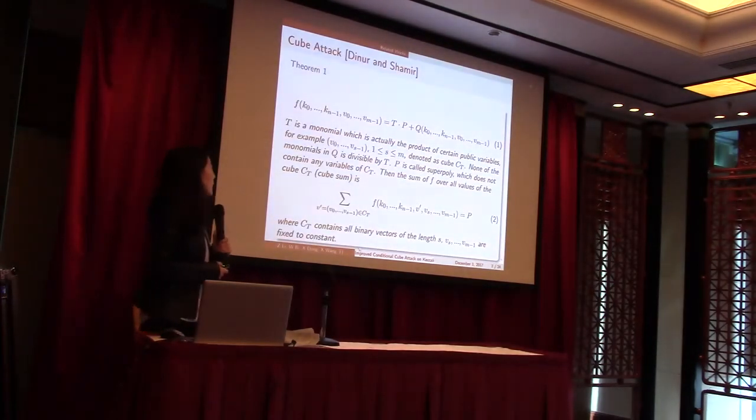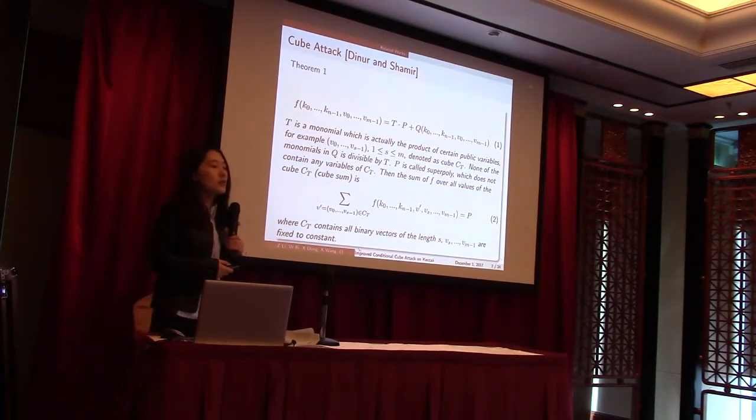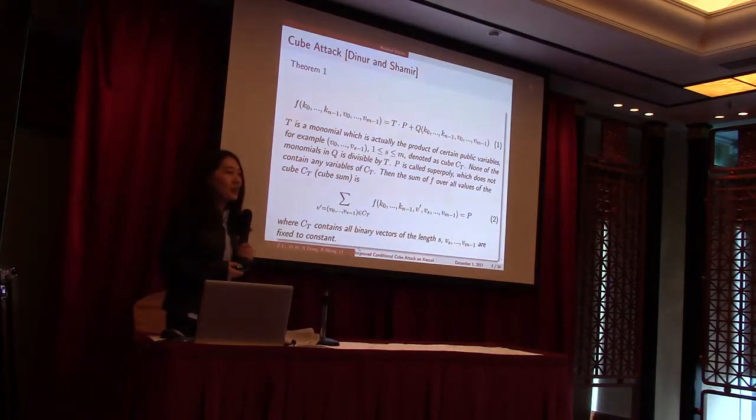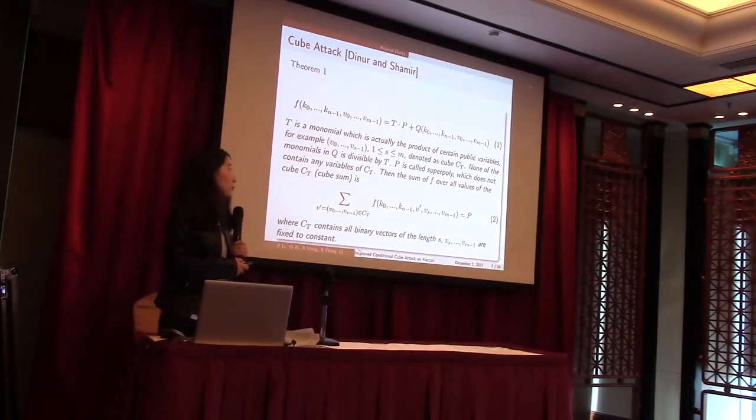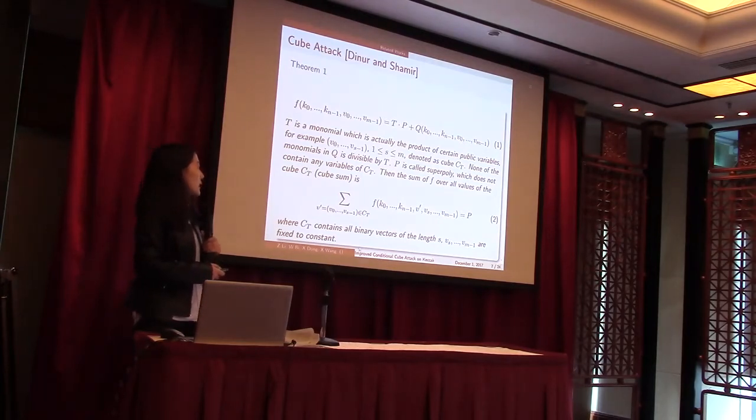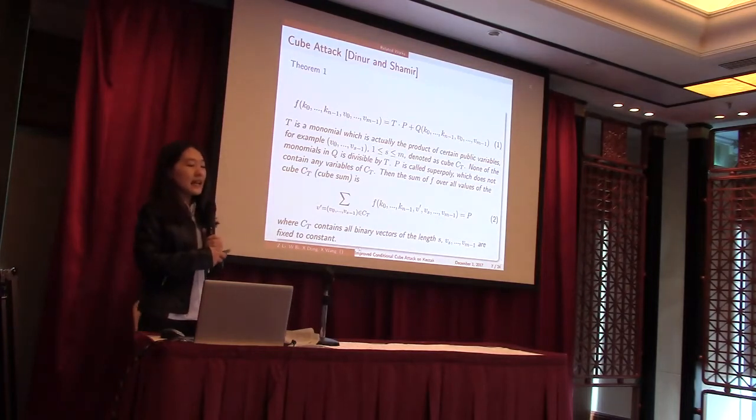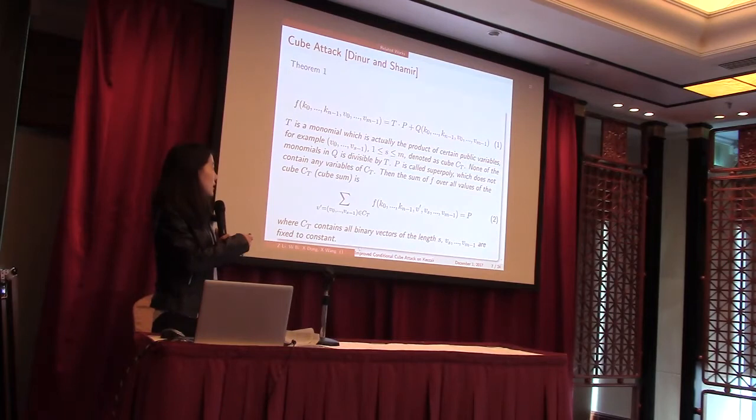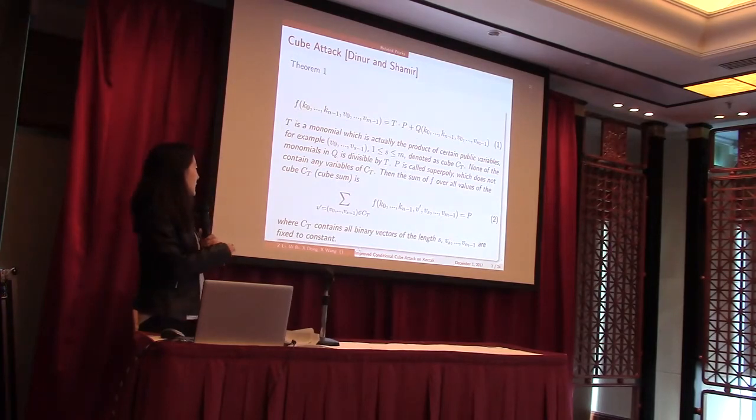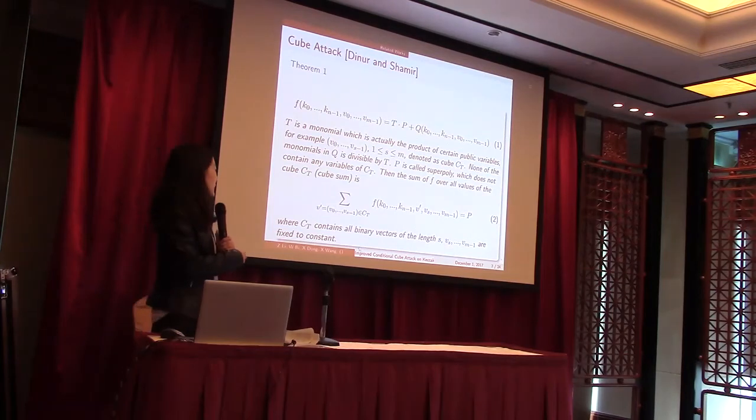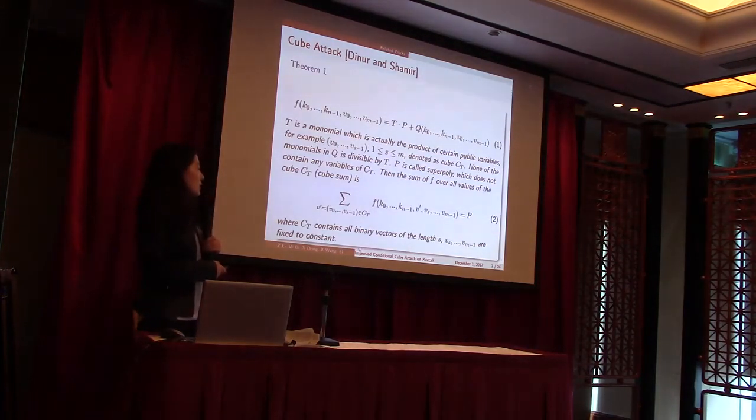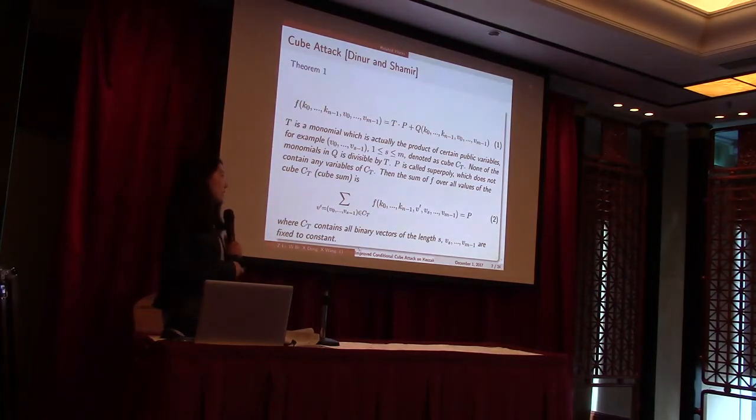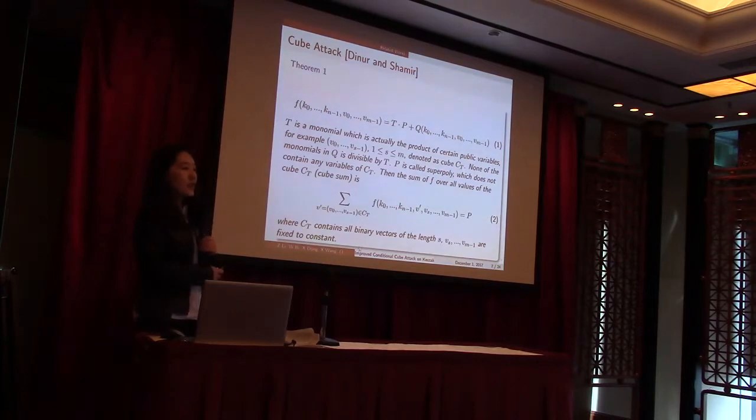In cube attack, a cipher algorithm is represented as a polynomial F and T is a product of public variables. The monomials in F which is divided exactly by T is put in T times P, and the others are put in Q. When they sum up F over all the values in T, they can find that the sum is just P. When P is simple, such as linear, the equations can be solved and get the solution of key bits.